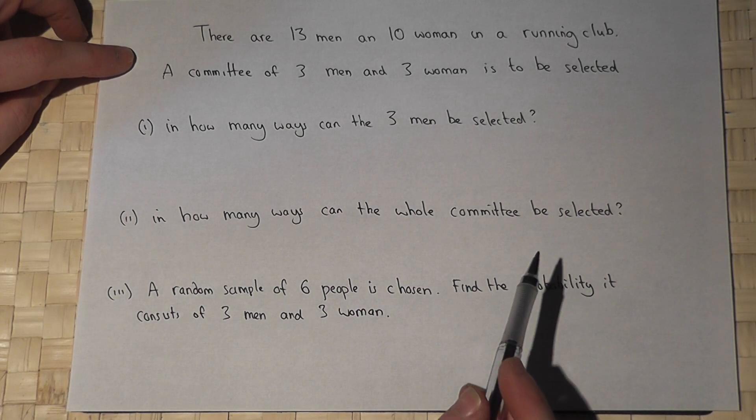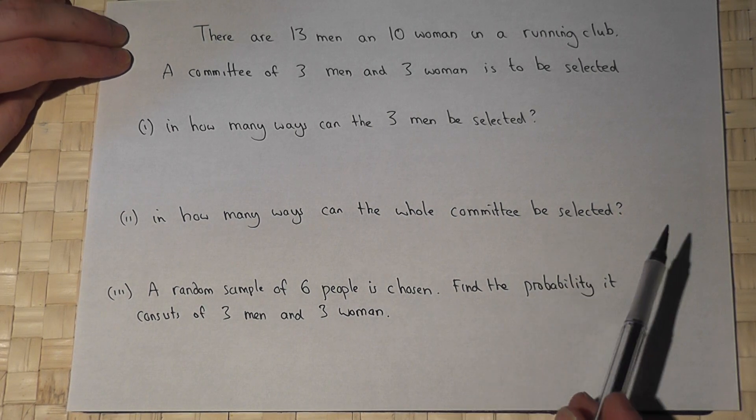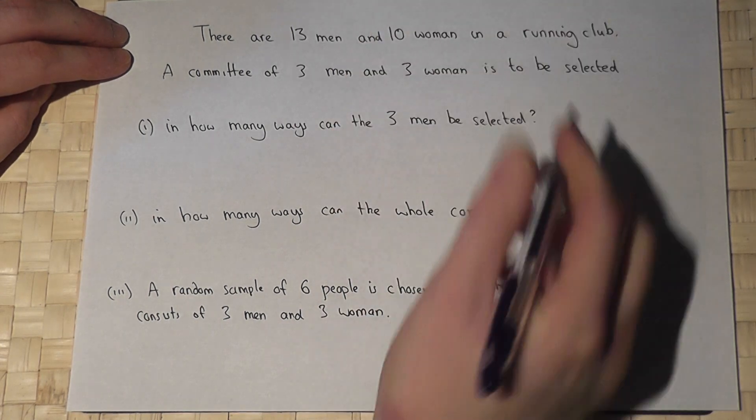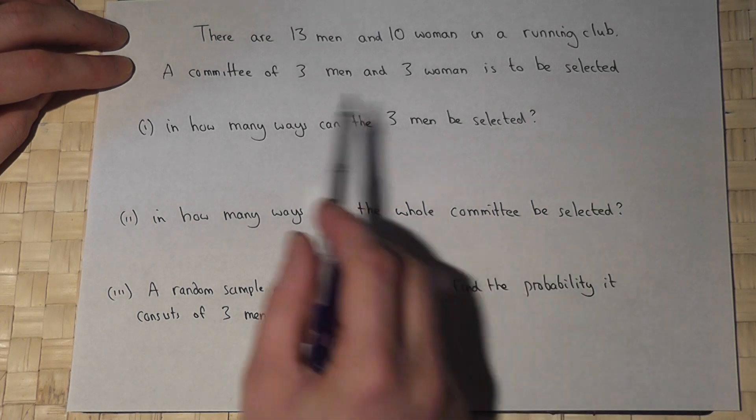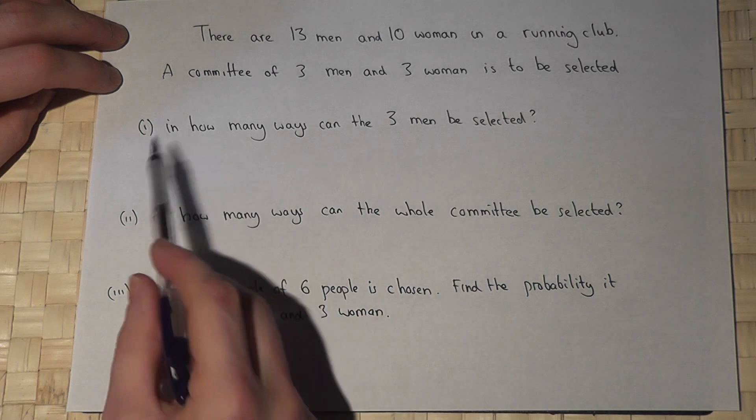This question looks at the nCr button on the calculator. We're told there are 13 men and 10 women in a running club, and we want to select a committee of three men and three women.